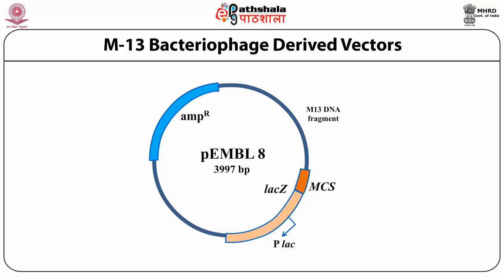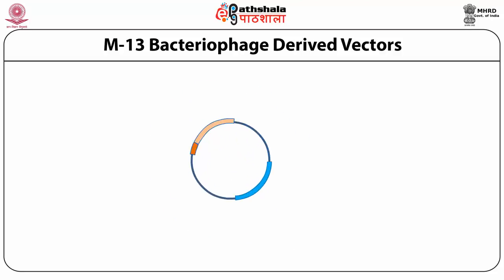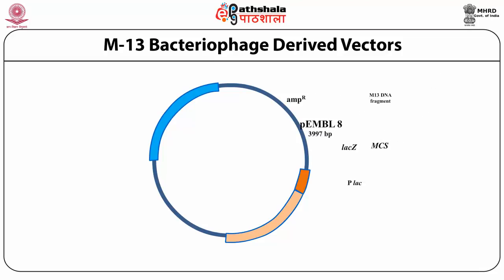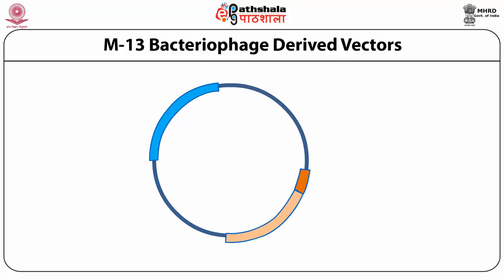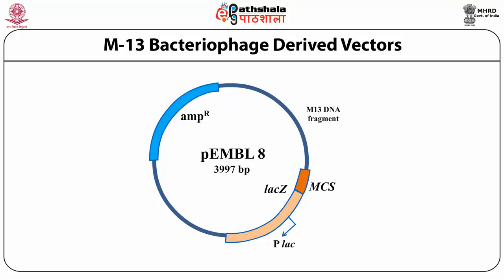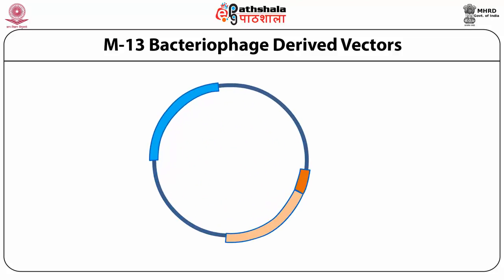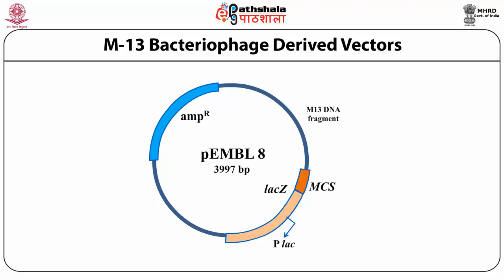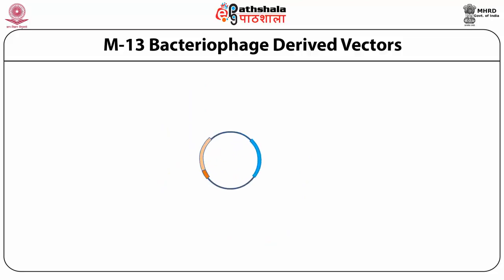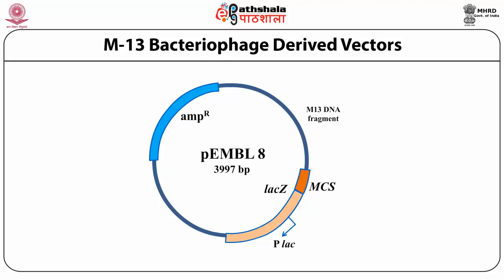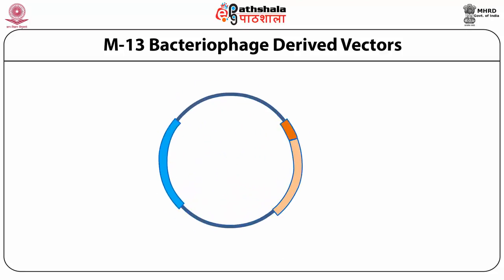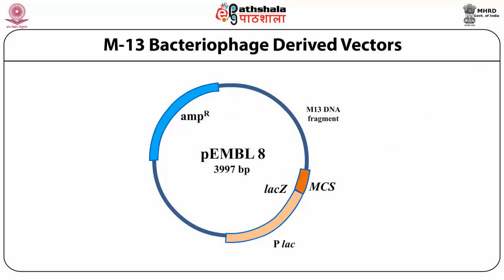One of the first hybrid phasmid vectors was pEMBL, constructed in 1983. They are characterized by the presence of the Bla gene, a selectable marker for ampicillin resistance, a short segment coding for the alpha peptide of beta-galactosidase containing the multiple cloning sites, and the intergenic region of phage F1. These vectors have been used successfully for DNA sequencing with the dideoxy method. The pEMBL plasmids have the advantage of being smaller than M13 vectors, the purification of DNA is simple, and long inserts have higher stability in pEMBL plasmids than in M13 vectors.